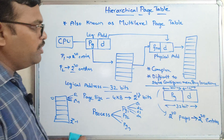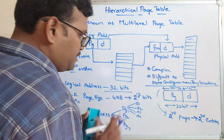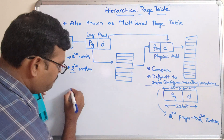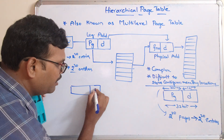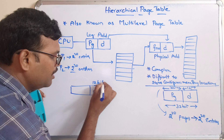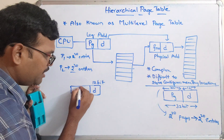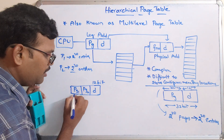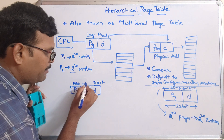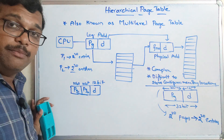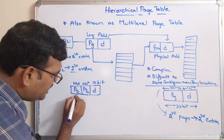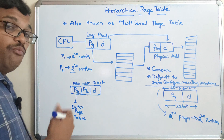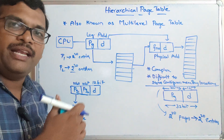In this multi-level page table, the displacement or offset remains the same with 12-bit representation. Coming to the page representation, we divide that into two parts: PG1 and PG2, each of 10 bits. That means we are creating two page tables. This first one is called the outer page table, and what is available in this outer page table is the index of all the remaining page tables.